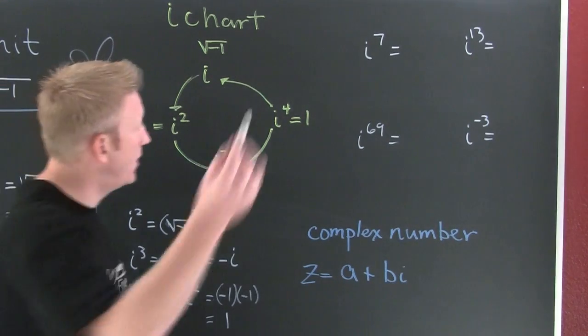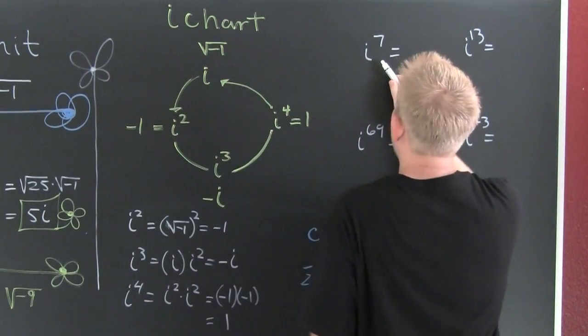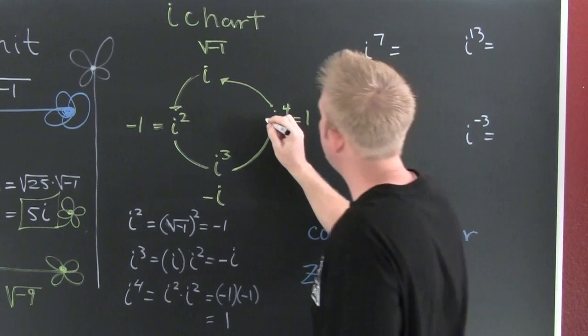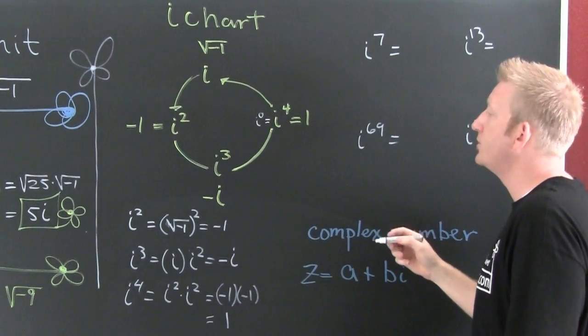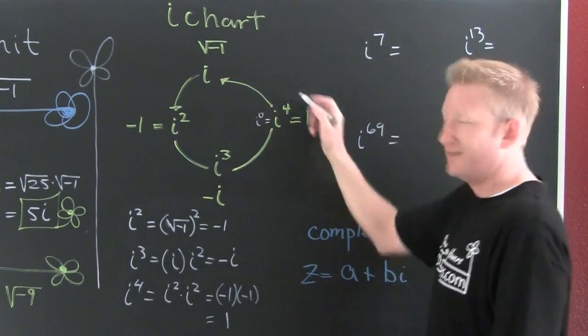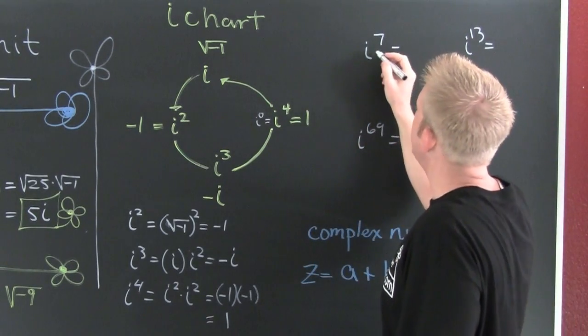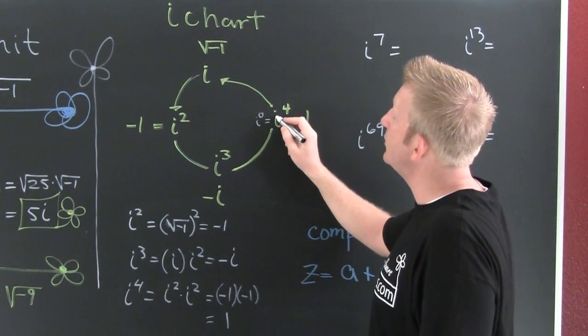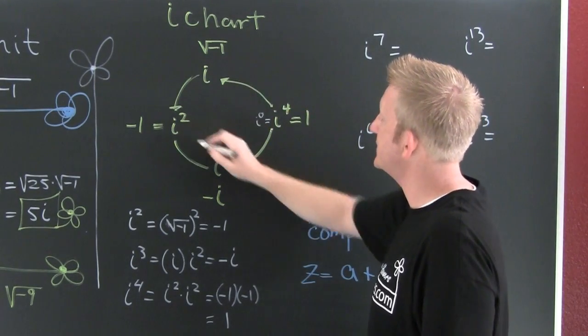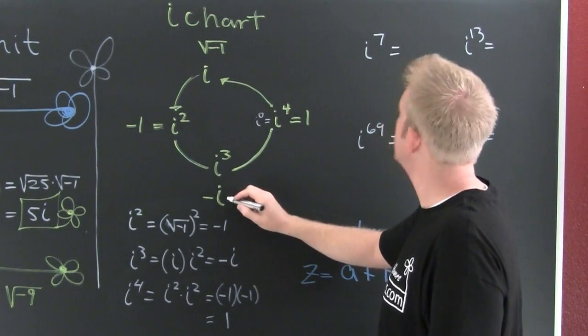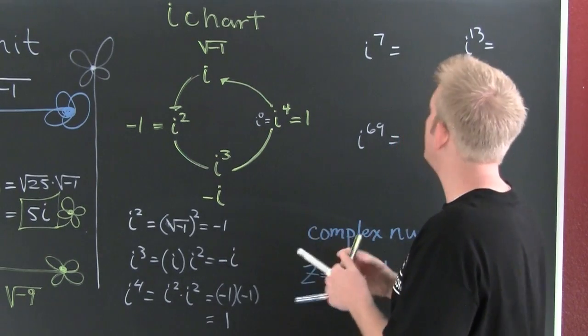Here's how this i chart works. If we were looking for i to the seventh, this is the same as i to the zero—anything that's a zero power is 1. In this group, it'll be 1. So we start at zero, then go 1, 2, 3, 4, 5, 6, 7. This is going to be minus i.